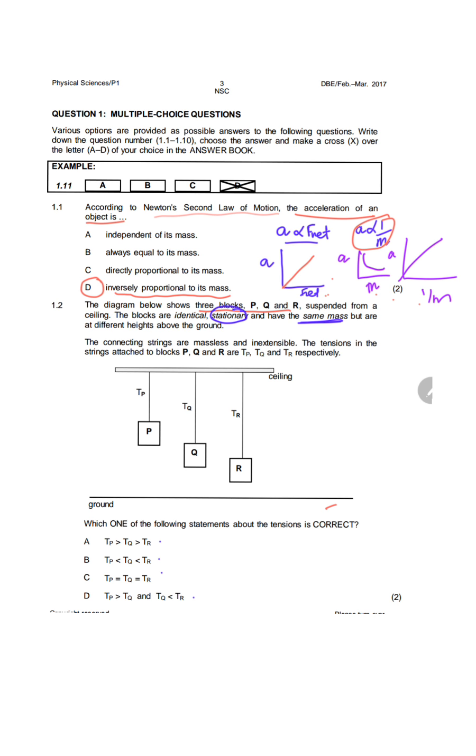There's a tension force upwards on P, holding P upwards, and the weight of P downwards. For Q, we would have an upward force of the tension and the weight of Q downwards. And for R, we would have the same upward force and the weight of R.